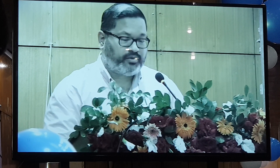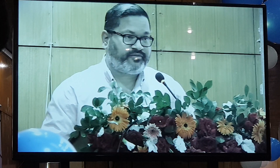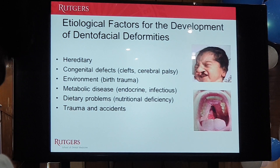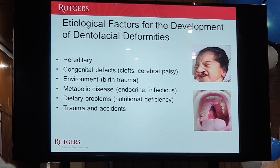In general in the U.S., it's thought that about 10% of the population have Class 2 malocclusions, 2% of which actually require surgical intervention. Class 3 malocclusions are much less common, about 2.5% of the population, but almost half require surgical intervention. The etiology for dental facial deformities may involve some genetics, some congenital defects, and a lot of other things, but in general in my experience, it's just bad luck, so to speak.